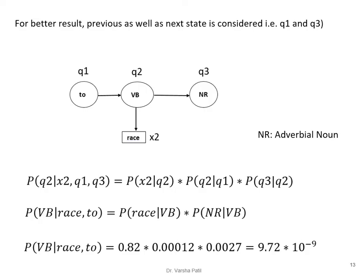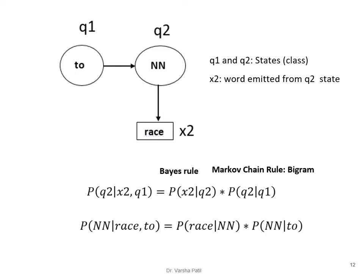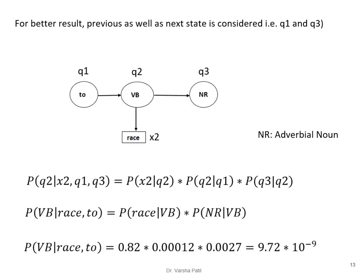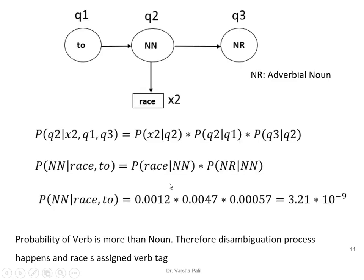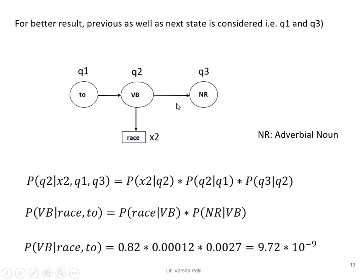Using random example values: for verb, 0.82 × 0.00012 × 0.0027 gives approximately 9.72 × 10⁻⁷, and for noun we get 3.21 × 10⁻⁷. Since the verb probability is higher, 'raise' is assigned the verb tag. We can also consider the next state Q3 — determining the POS tag for X2 using both the previous state Q1 and the future state Q3, as mentioned in Jurafsky's book. This simply adds one more state transition value: P(Q3 | Q2) to the equation.